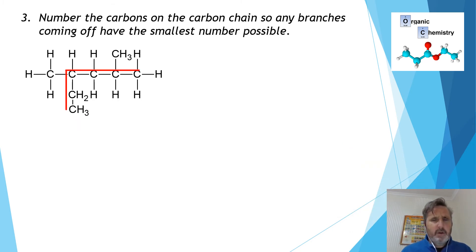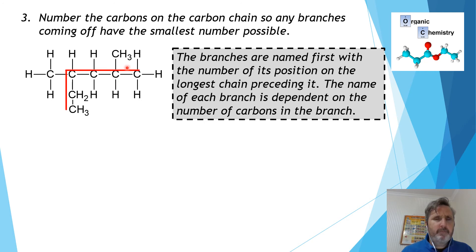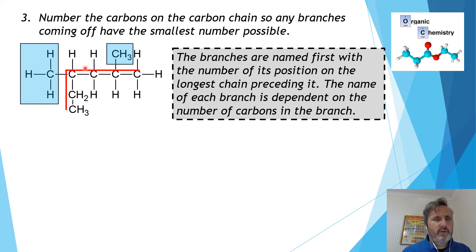Now we've found the main chain and know it's called hexane. We specifically want to look at the other parts — these are called branches, or sometimes substituents. These are the branches that come off the main chain. Think of the main chain as the main road and these are the houses coming off it — I want to know their address numbers in order to name this molecule correctly.